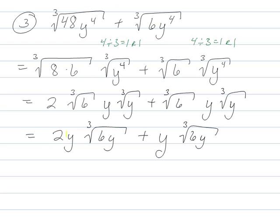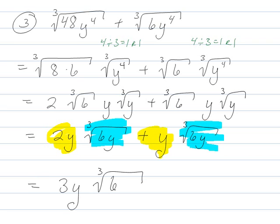So you've got 2y plus y of blah. So 2y plus y is 3y with blah. And that's your answer.